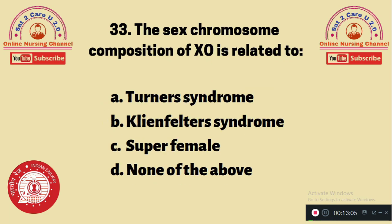Question 33: The sex chromosome composition of XO is related to — A. Turner's syndrome, B. Klinefelter's syndrome, C. Superfemale, D. None of the above. When there is an XO chromosome with no Y and no second X chromosome, that condition is called Turner's syndrome. The answer is A.